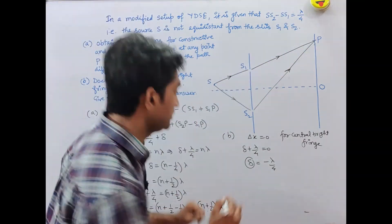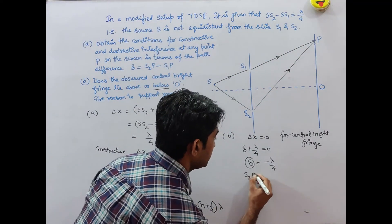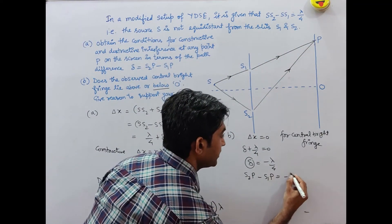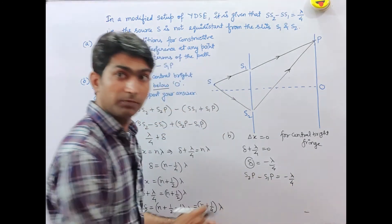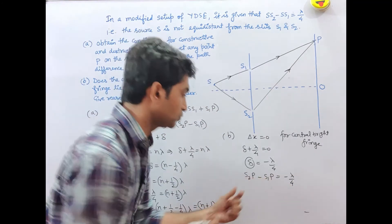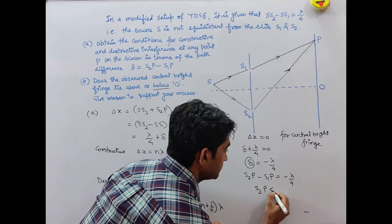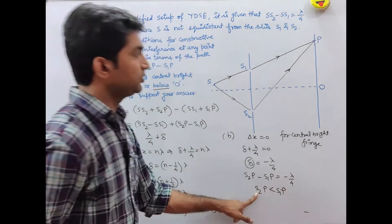Actually, delta is S2P minus S1P. So S2P minus S1P equals minus lambda by 4. This means S1P should be greater than S2P, and this will only happen when point P is below.